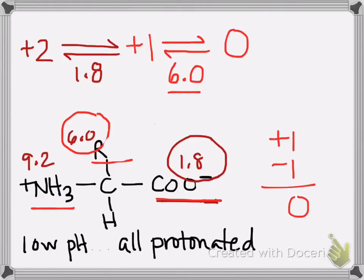Notice that we're jumping in one unit increment. So we go from a plus 2 to a plus 1 to a 0 each time we pass a pKa.